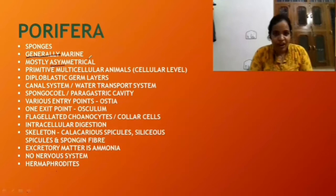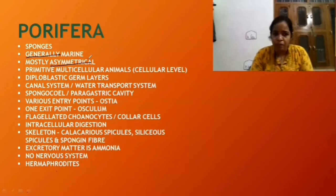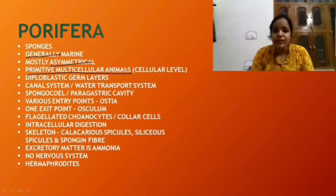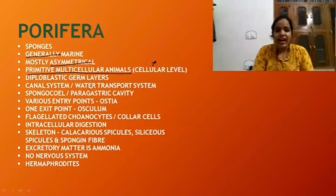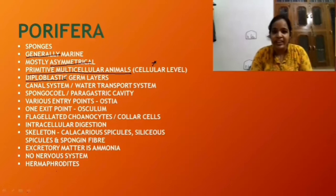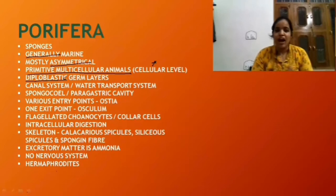These are the primitive multicellular animals — they just have the aggregation of cells, hence cellular level of organization is there. No tissue formation, no organ formation is present in Porifera. They have diploblastic germ layers, meaning only ectoderm and endoderm are present. In between these layers, some undifferentiated cells will be there — that is the mesoglia. Mesoderm is absent.